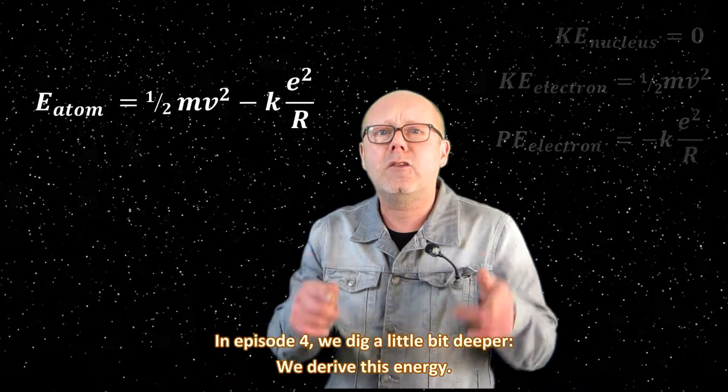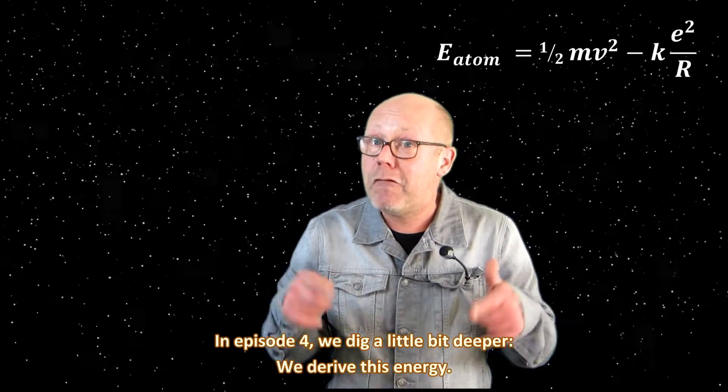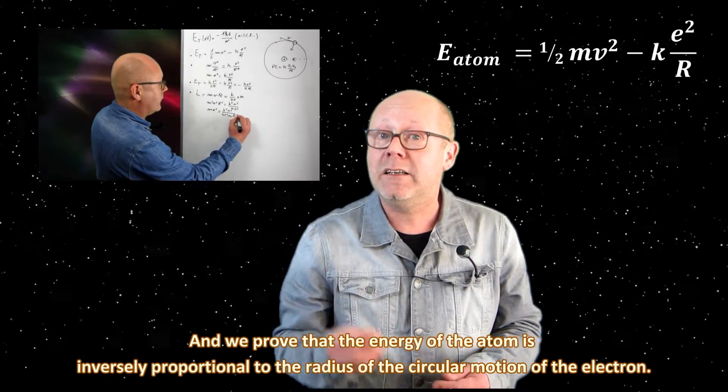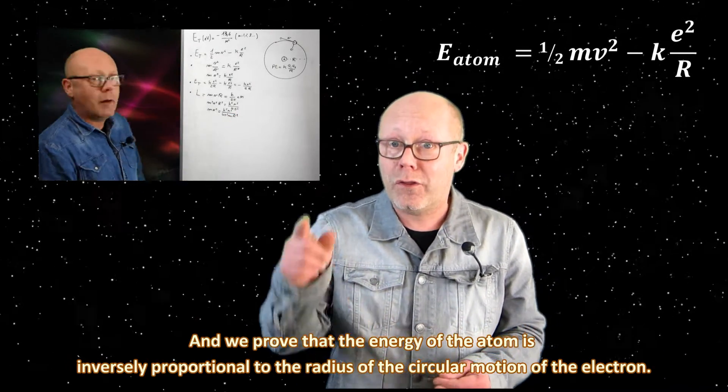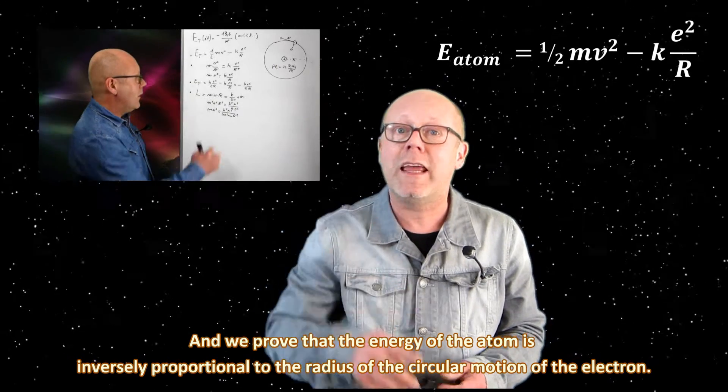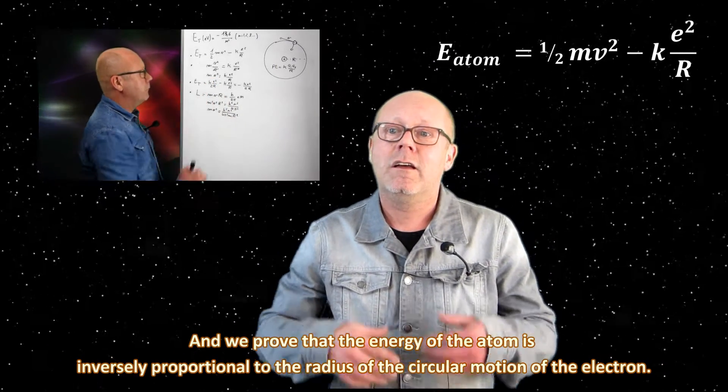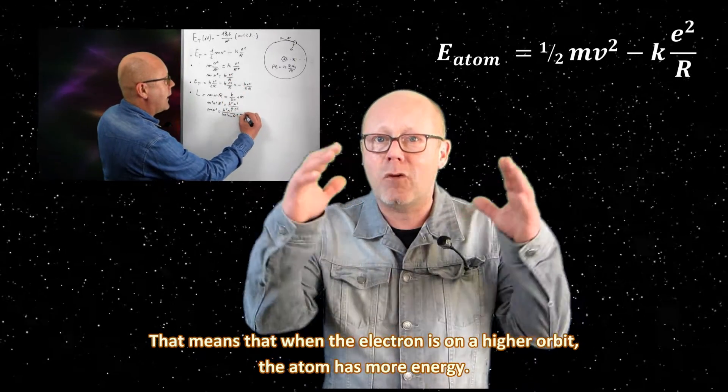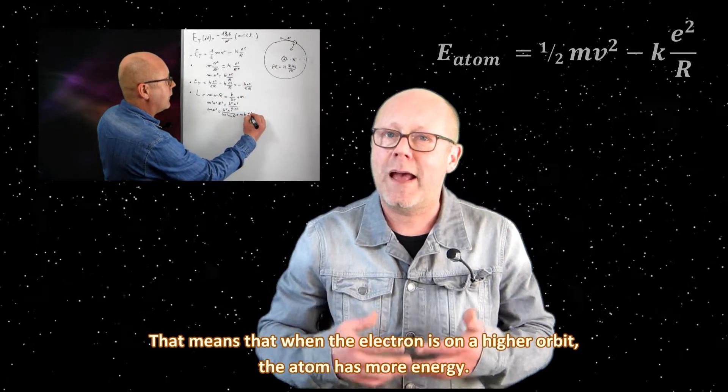In episode 4, we dig a little bit deeper. We derive this energy, and we prove that the energy of the atom is inversely proportional to the radius of the circular motion of the electron. That means that when the electron is on a higher orbit, the atom has more energy.